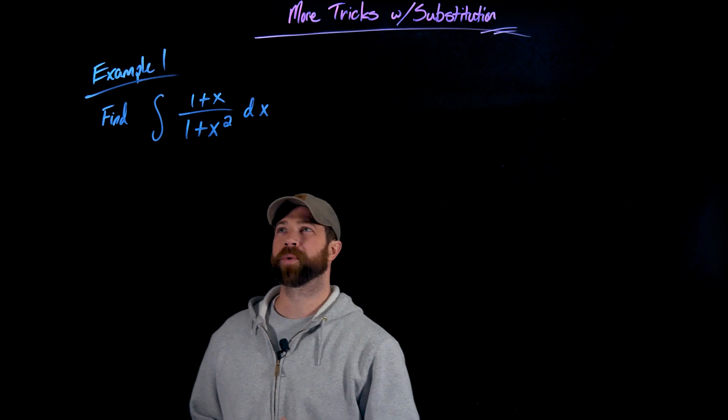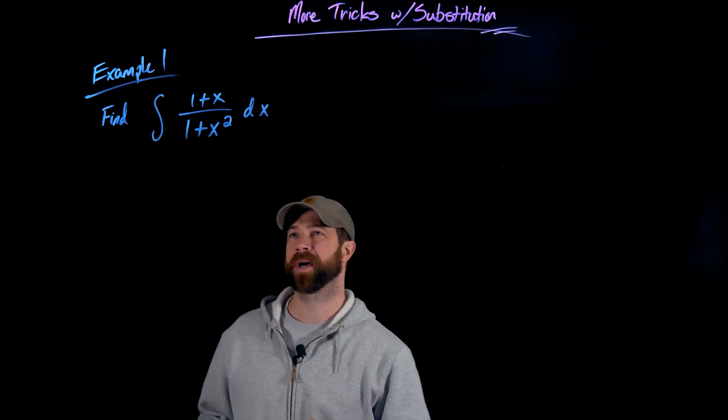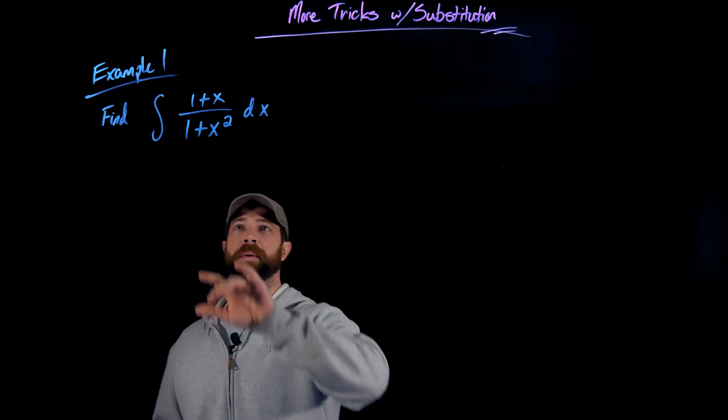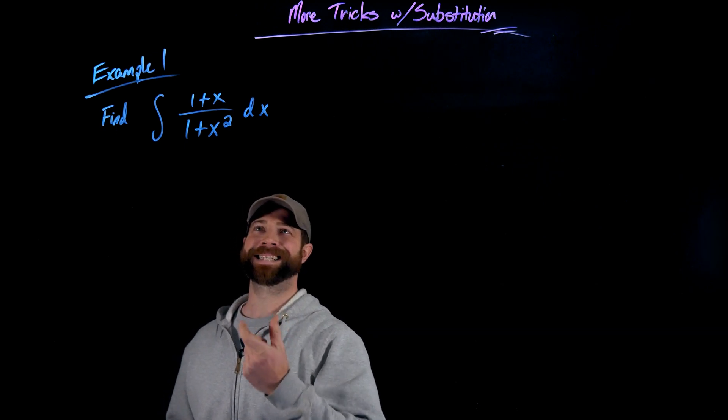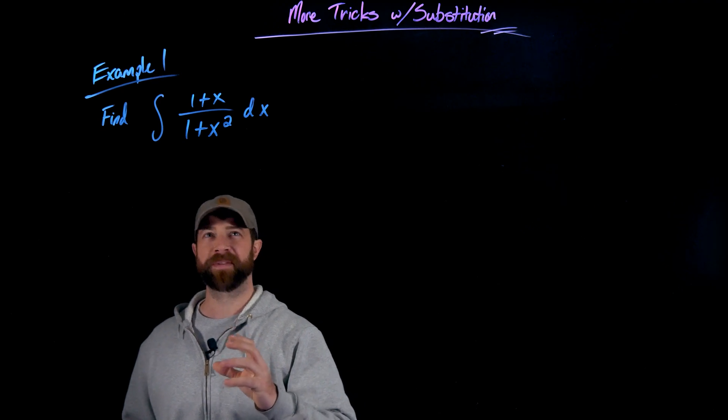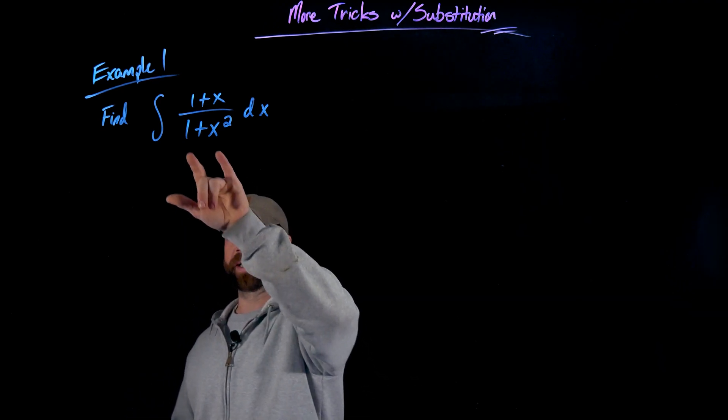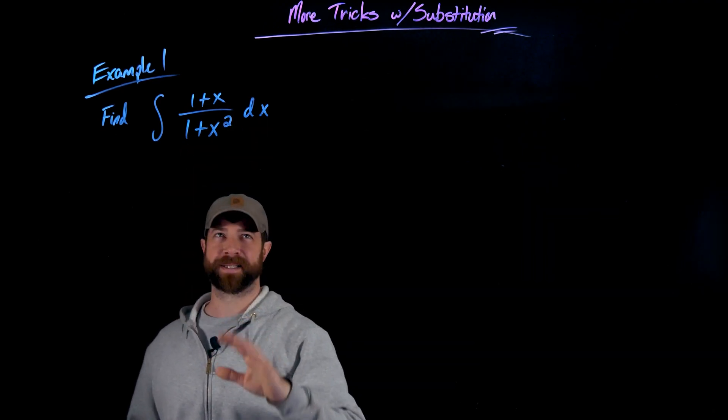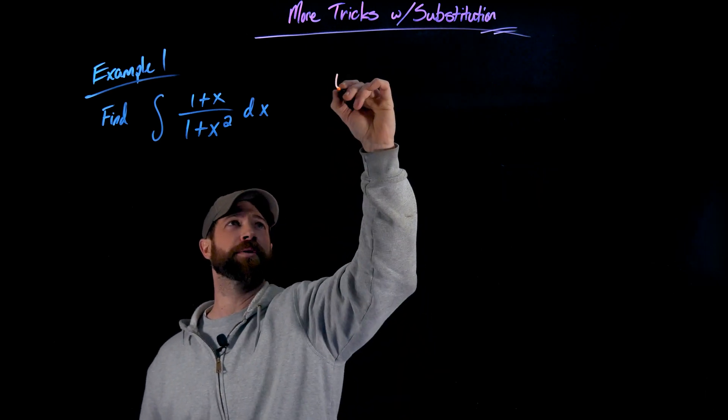So in this first example right here, we have this rational expression that we've seen before. What might make sense in this case for me to use a u-substitution of this denominator right here, specifically because I'll get 2x when I differentiate this and I have that x up there. I just want to model this real quick.